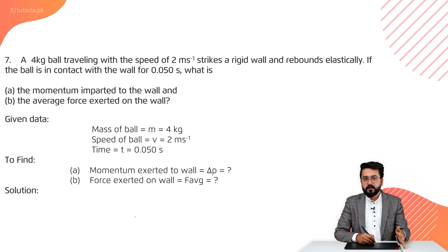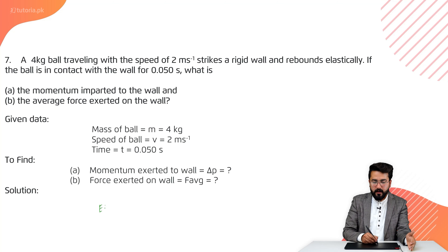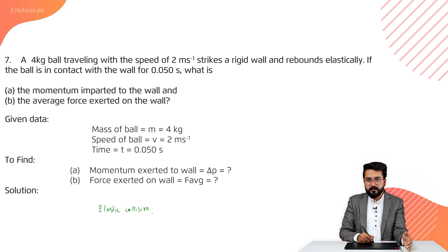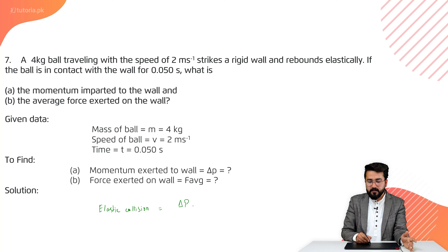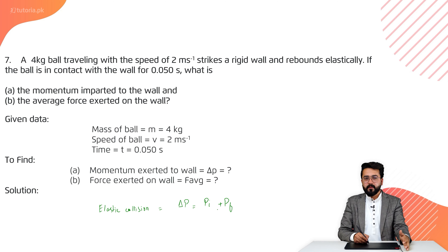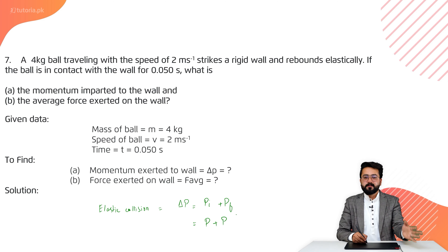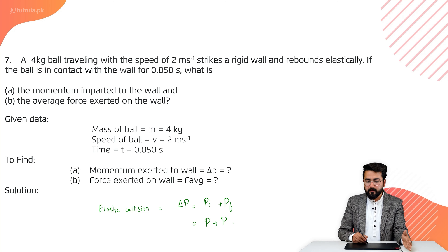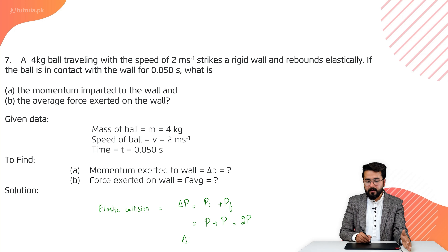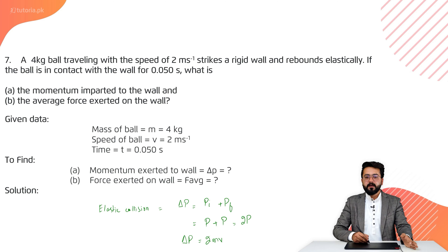For elastic collision, the change in momentum is considered. In an elastic collision, the change in momentum equals the initial plus final momentum. Since the ball rebounds, we add the two momenta, giving delta p equal to 2p, which equals 2mv.